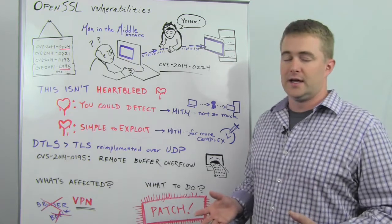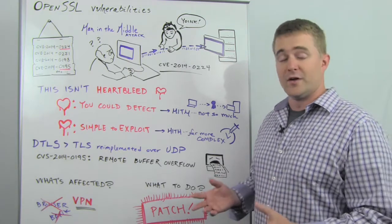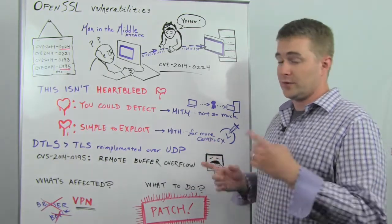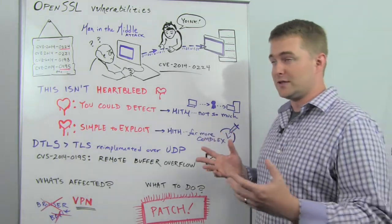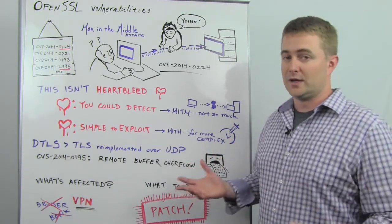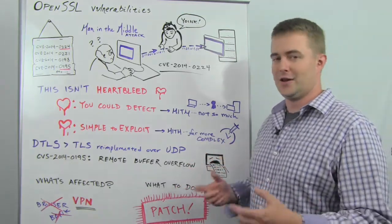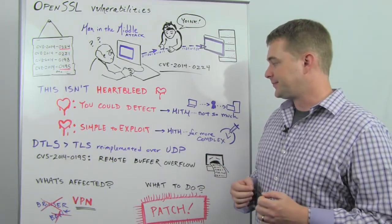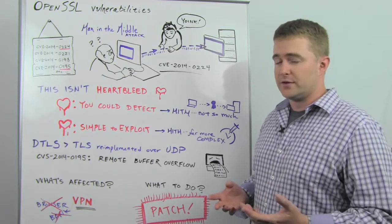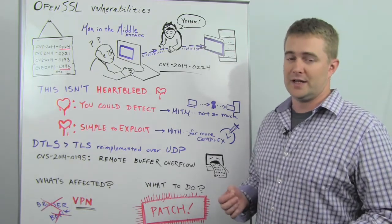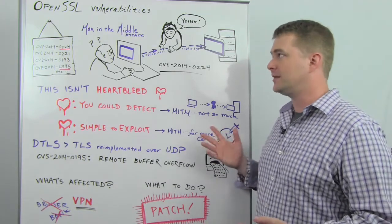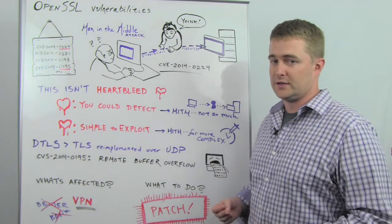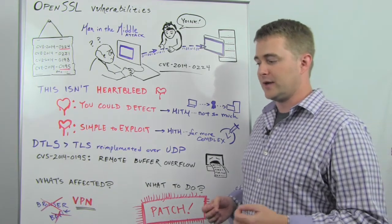The ironic thing is that because Heartbleed hit three weeks ago and everybody rushed to patch everything, this vulnerability — which requires both the client and the server to be at the more recent vulnerable versions — is actually probably more widespread than it would have been if Heartbleed hadn't caused everybody to patch recently. The world's a funny place sometimes. Bruce Schneier referred to Heartbleed as an 11 on a scale of 1 to 10 in severity. This is probably more like a 6, give or take. It would require a very targeted approach for somebody to take advantage of it, and you're less likely to see it actually impacting you.